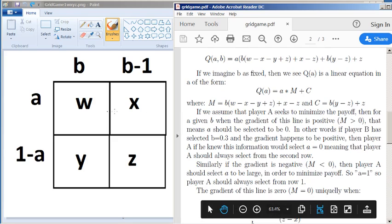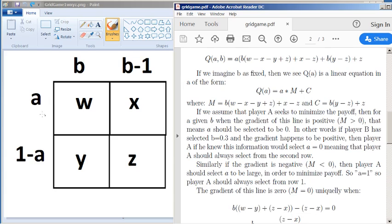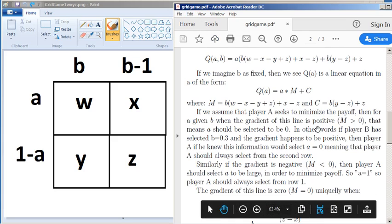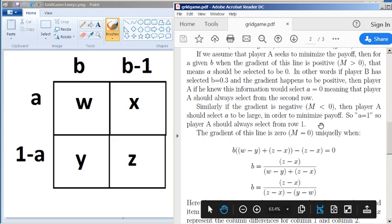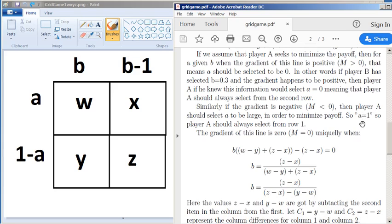So in other words, a probability of zero, if a is zero, what does that mean? It means you never select row one, so you just select row two. So if this value is positive, then the strategy for player a is to just select row two. If this value is negative, the opposite happens, because it's sliding the other way, the line is this way now. So when m is less than zero, you want to make a equals to one. And what does that mean? That means you always select row one.